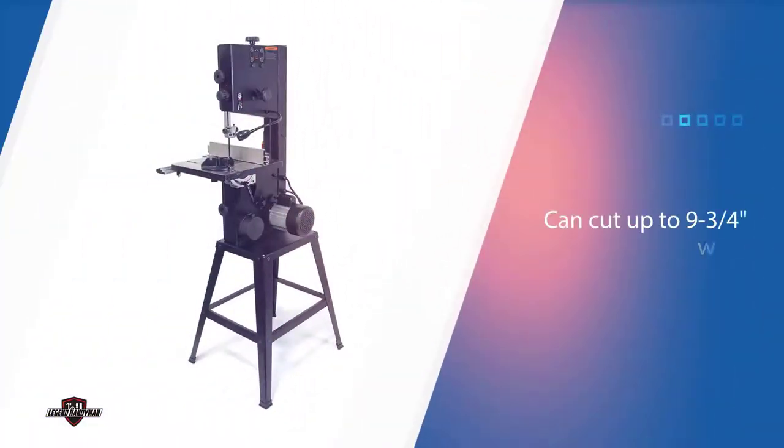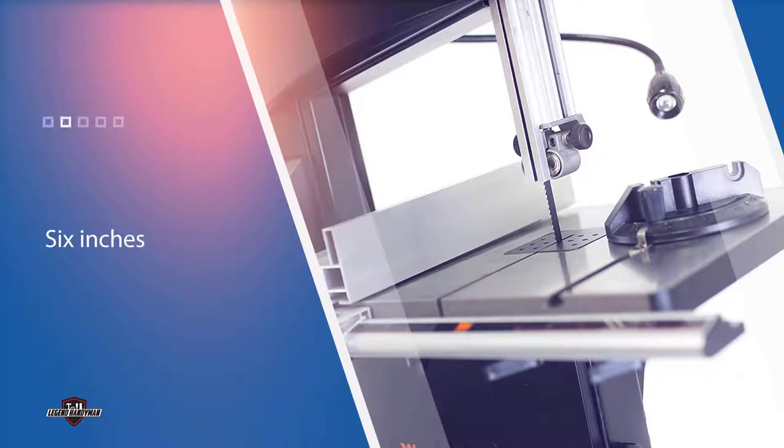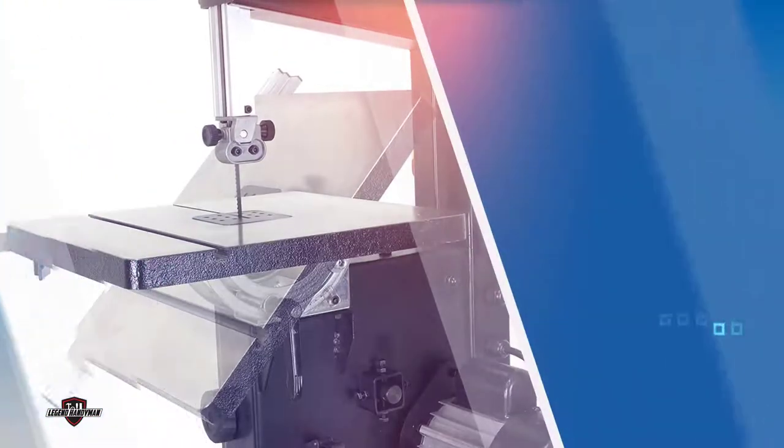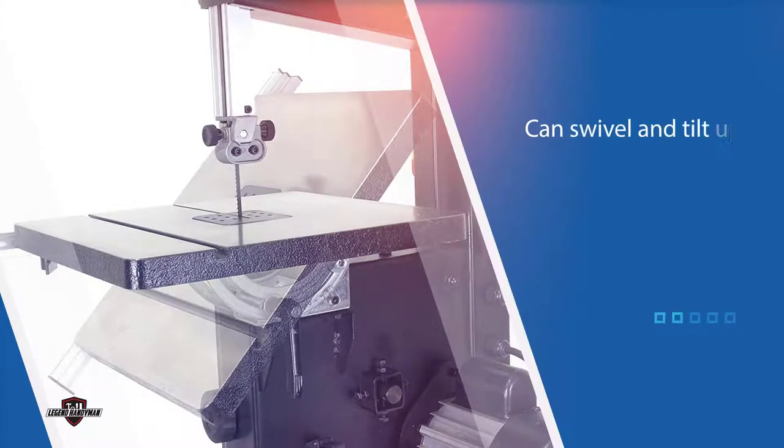You might want to check out the powerful WEN3962 as it can cut up to 9 3/4 inches wide and six inches deep. The large 14 1/8 x 12 1/2 inch wood table can swivel and tilt up to 45 degrees.